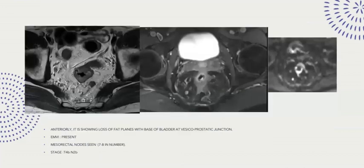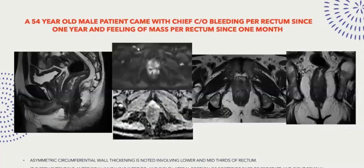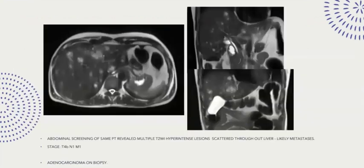Anteriorly, there is also loss of fat planes with the base of the bladder at the vesico-prostatic junction. A 54-year-old male patient presented with bleeding per rectum since one year and a prolapsing mass per rectum since one month. An asymmetric circumferential wall thickening is noted involving the lower and mid-thirds of the rectum, extending anteriorly and involving the inferior and right lateral portion of the posterior part of the prostate and right seminal vesicles. Abdominal screening reveals multiple T2 hyperintense lesions scattered throughout the liver, likely metastases. It is staged as T4B N1 M1.